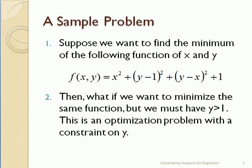So our sample problem is this. We have a function of two variables: it's x squared plus y minus 1 squared plus y minus x squared plus 1. And we want to find the minimum of that function for all values of x and y. Then if we can get that to work, we'll do the second problem, which says we want to find the minimum of the same function, but we want to make sure that y is always greater than 1. So we want to minimize f subject to the constraint that y is greater than 1. And I'll actually do greater than equal to 1, because it's a little more straightforward.